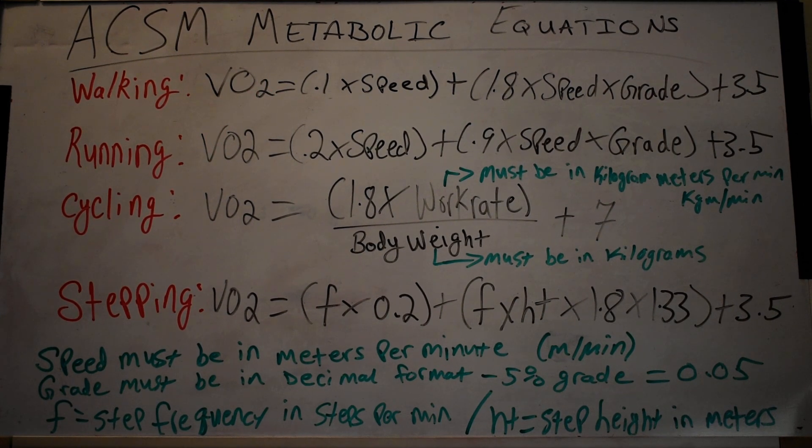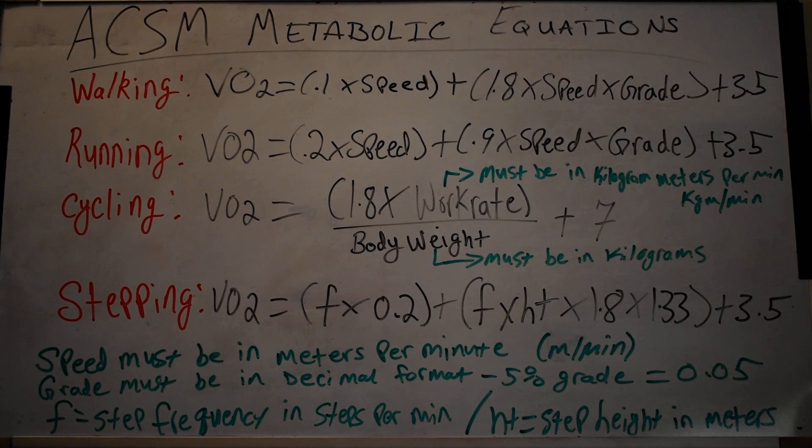Now in your walking and your running equations, right off the bat I want to point out a few caveats. With the walking equation, the walking equation is most accurate for speeds of 1.9 miles per hour to 3.7 miles per hour. Keep that in mind. The running equation is most accurate for any speeds over 5 miles per hour.